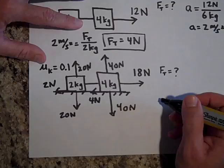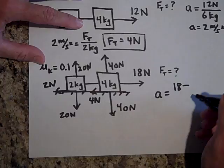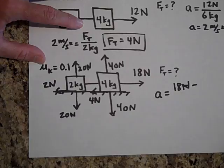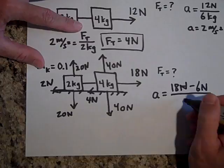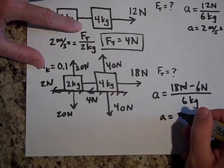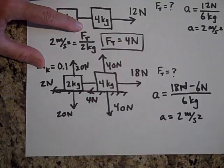The total acceleration will be 18 newtons to the right minus 6 newtons of friction to the left, all over the total mass of 6 kilograms. So a = 2 meters per second squared. Nice how that works out.